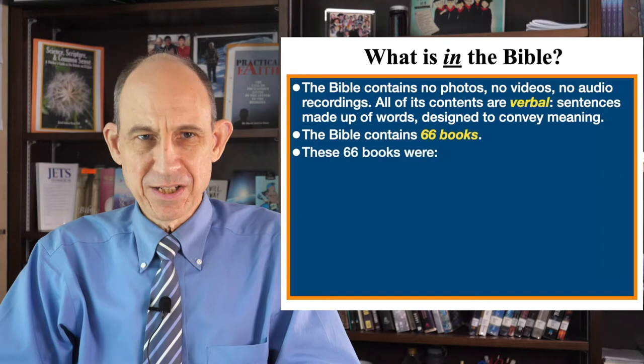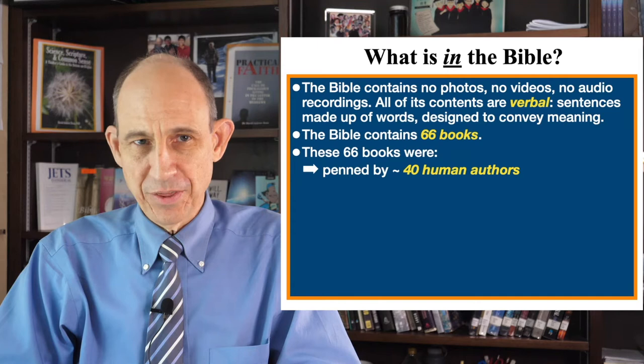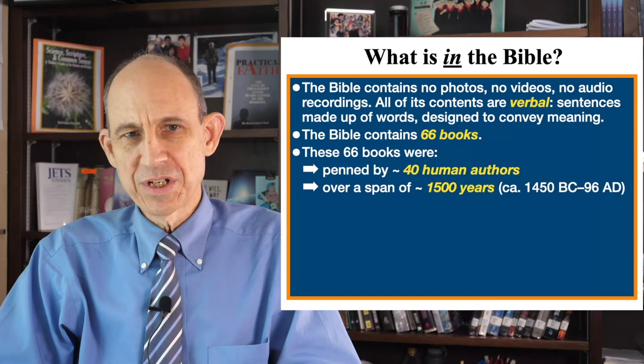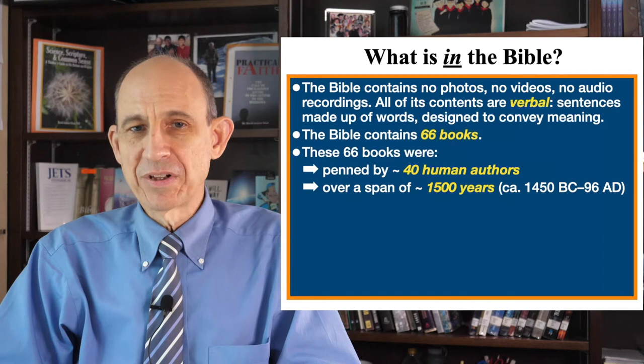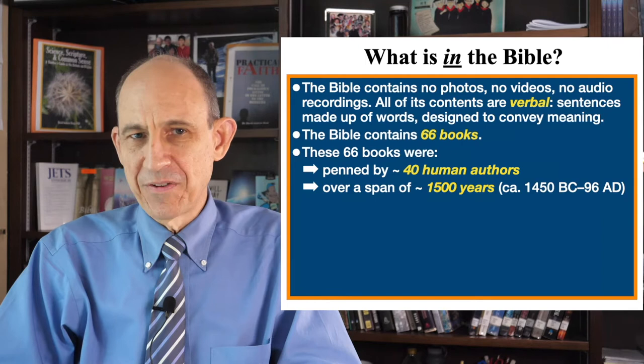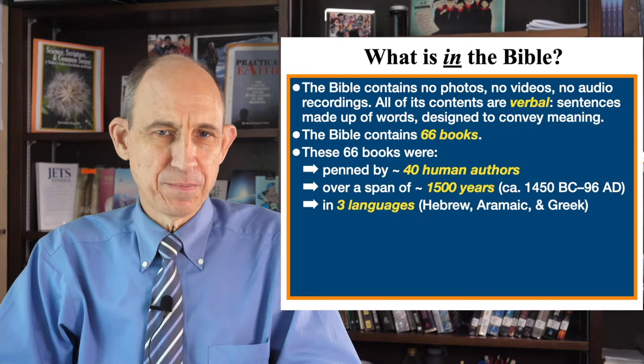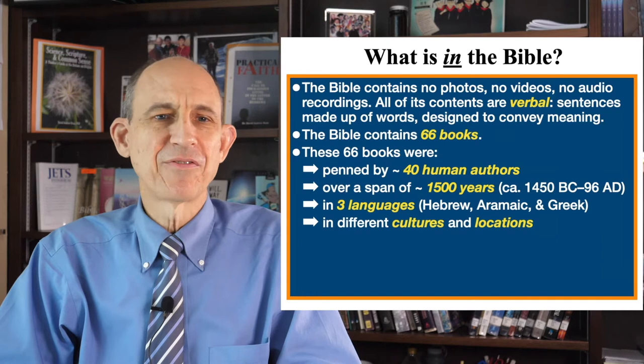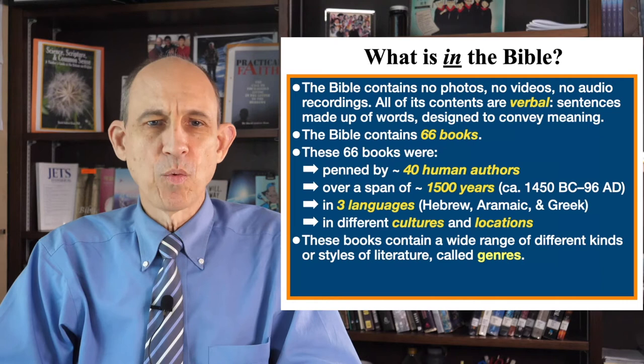Back to the question of content: the Bible contains 66 books, penned by approximately 40 human authors over a span of about 1,500 years. If we assume that Moses began writing the Pentateuch around the time of the Exodus, which was 1446 BC, and John the Apostle wrote the book of Revelation around 96 AD, that means the span of time is about 1,500 years. The Bible was written in three different languages — primarily Hebrew and Greek, but there's also some Aramaic in the Old Testament.